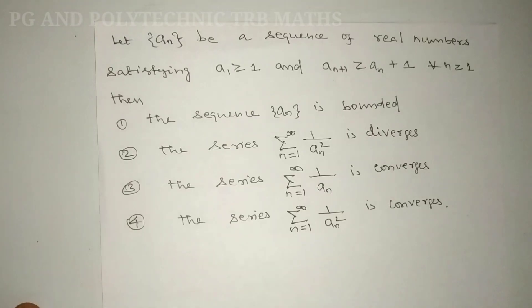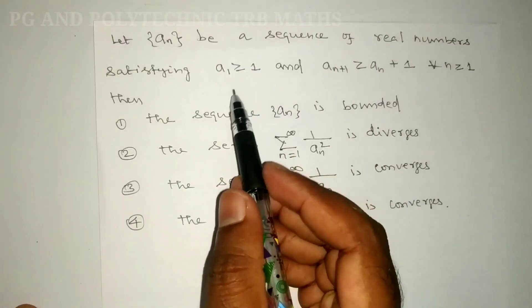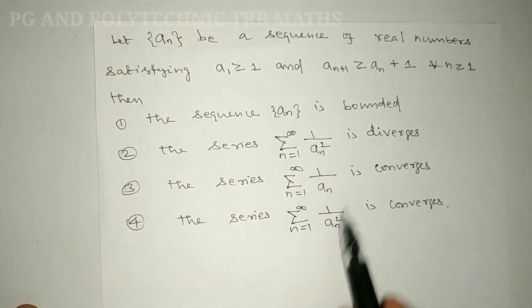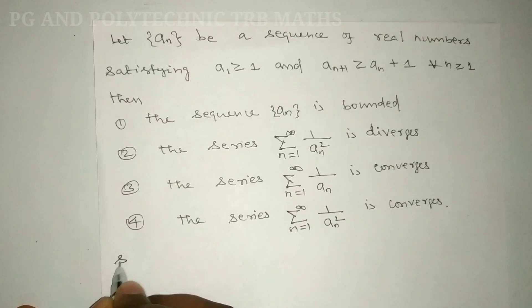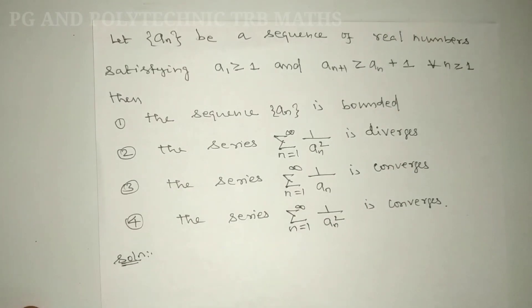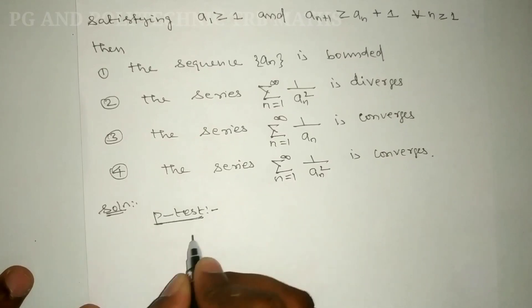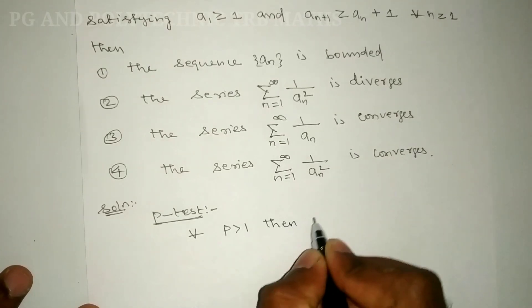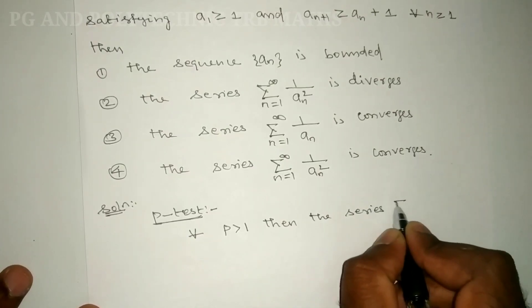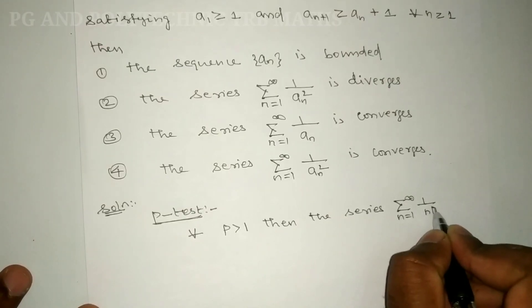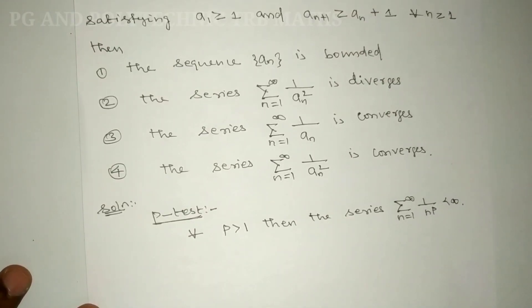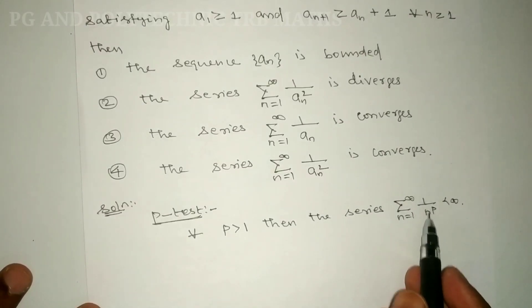The sequence of real numbers with a₁ ≥ 1 and a_{n+1} ≥ a_n + 1 — we need to find which option is correct. We will use the result that Σ(1/n^p) from n=1 to infinity converges when p > 1.